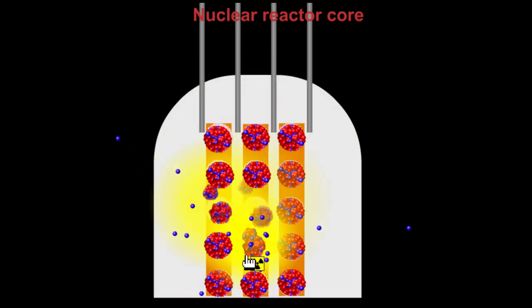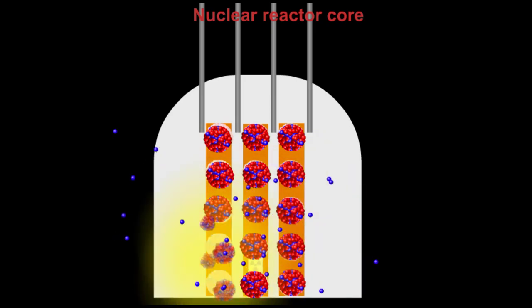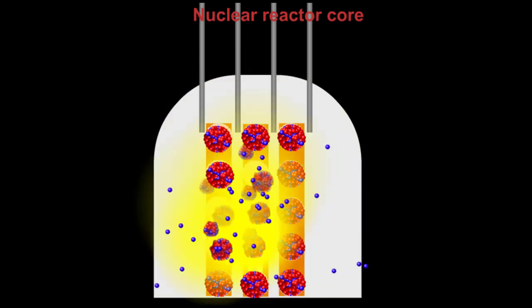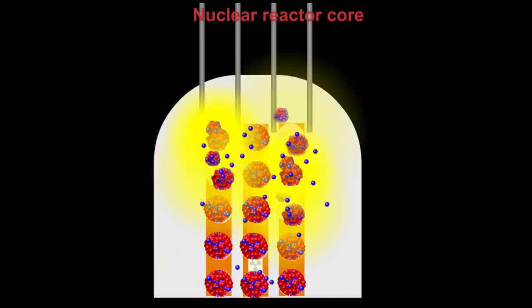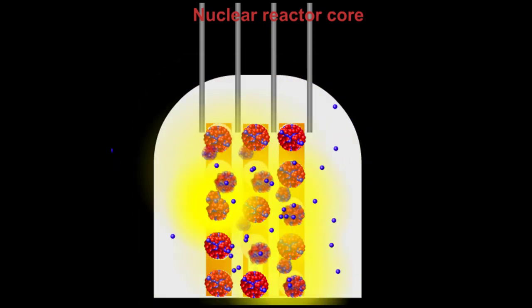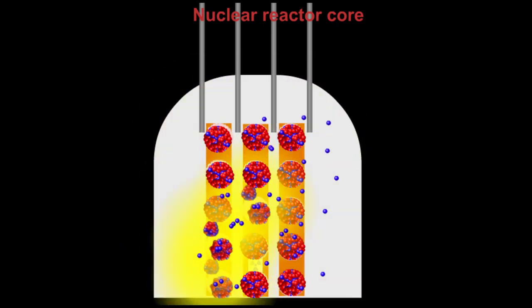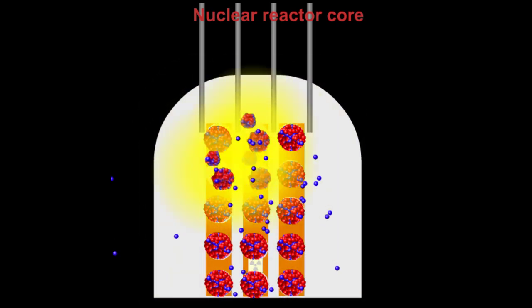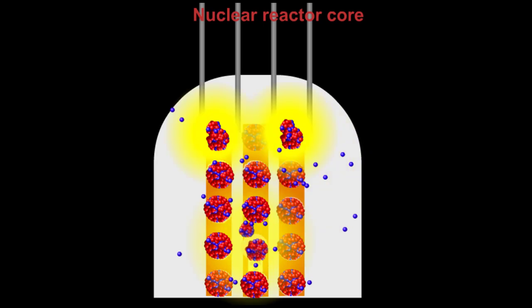After a while we can remove the neutron source and the reaction sustains itself because each fission releases neutrons that cause on average exactly one other fission. When this balance is reached, the reactor is said to be critical.